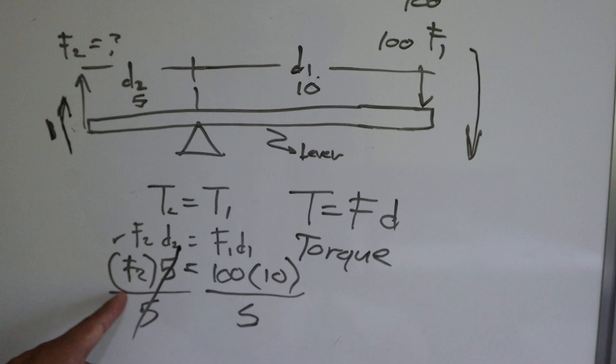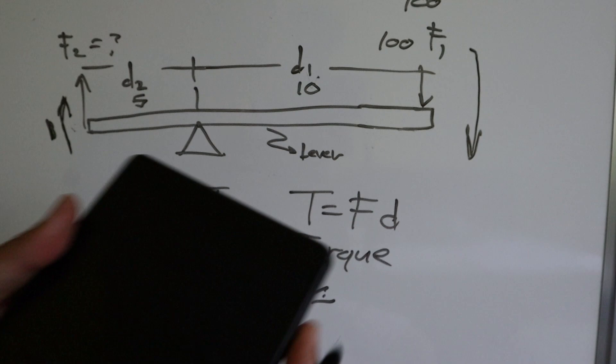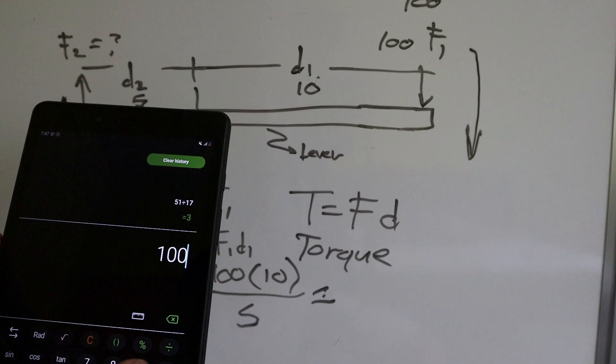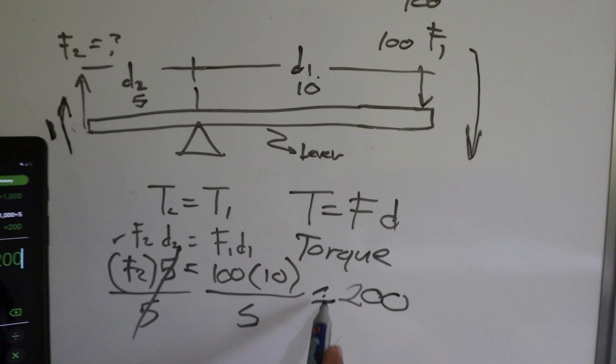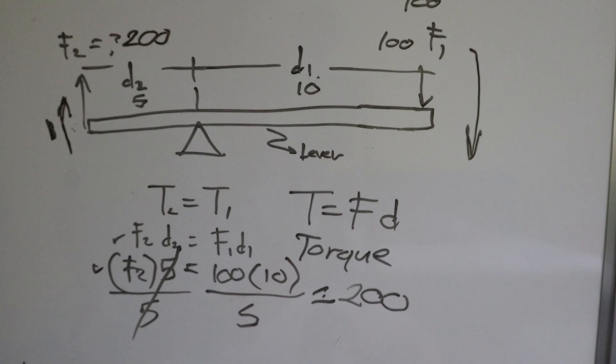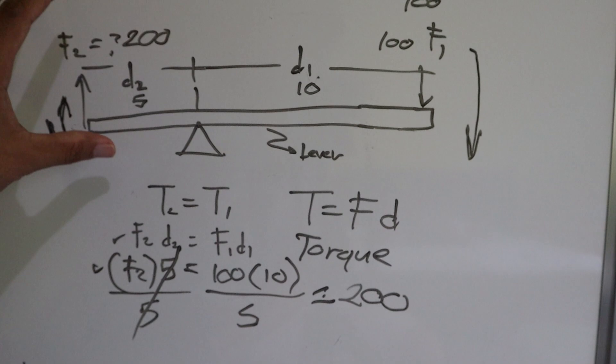Nakakuha tayo ng 200 na force para sa ating F2. So tumaas ba o humina ang pwersa sa kabila? Tumaas mga kaibigan. Gamit lamang ating simple machine, makaka-amplify natin ng pwersa ang may-exert natin sa kabila galing sa dito sa ating kabilang side ng lever. Yan ang ibig sabihin yan.